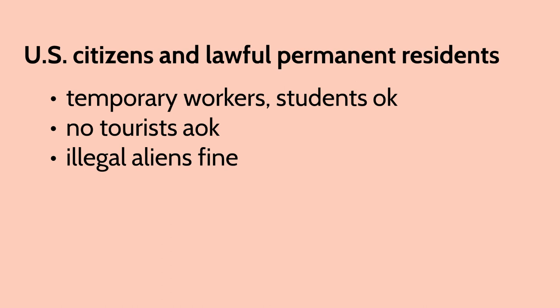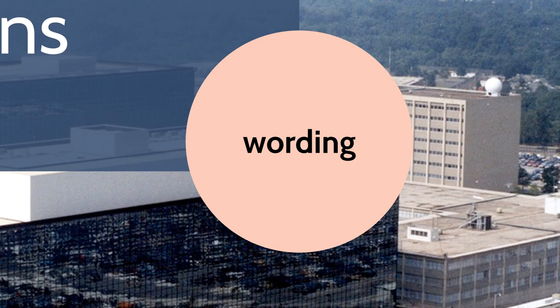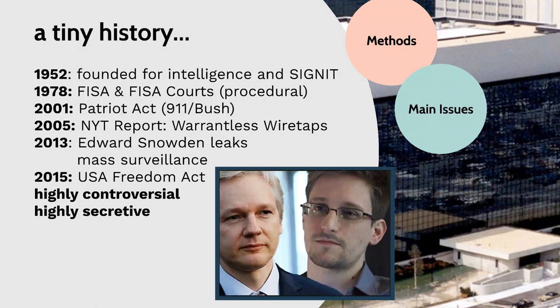U.S. citizens and lawful permanent residents means exactly what it sounds like. So lawful permanent residents — green card holders — would be part of this. It would not apply to temporary workers, international students, tourists, or illegal aliens. If you're in the U.S. illegally or temporarily, this would not apply to you — the NSA is still free and welcome to spy on you. That is wording.